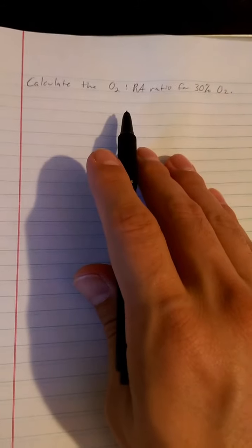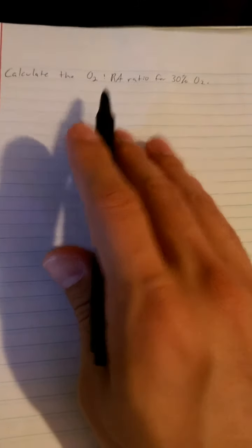I'm going to flip this over here. We are calculating the O2 ratio for 30% oxygen. The trick to that is this little formula here. We know we're looking for a ratio, so we're looking for an X value and a Y value, and it has to be in this kind of ratio.